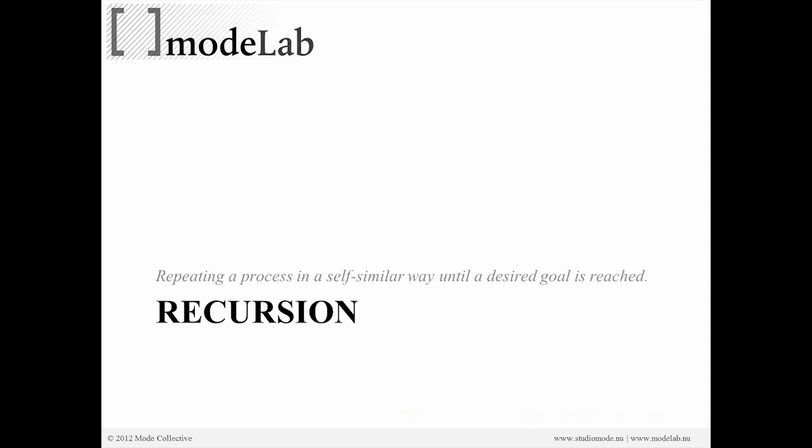In order to structure the script so that it will branch, we're going to use a recursive logic. To execute an action recursively means you're going to repeat that process in a self-similar way until the desired goal is reached. The difference between iteration and recursion is that iteration is a step-by-step process — first make sphere A, then sphere B, then sphere C — and you can look to the previously created sphere to make it a bit smarter.